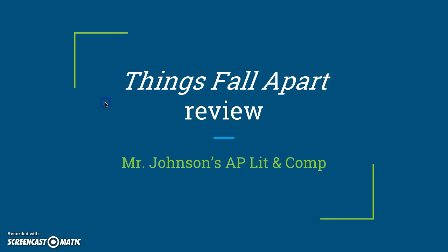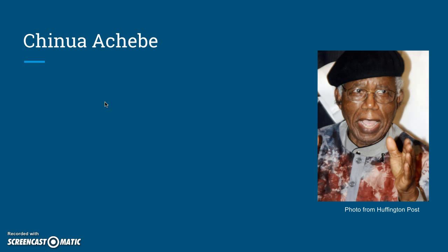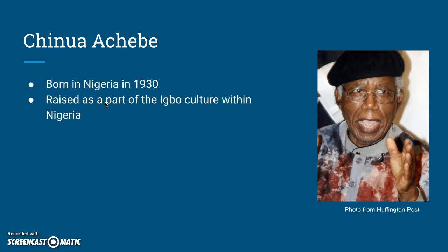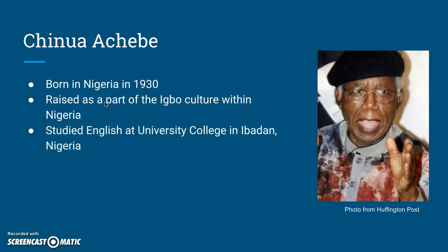Let's get started with a discussion about Chinua Achebe. Chinua Achebe, the author of Things Fall Apart, was born in Nigeria in 1930. He was raised as part of the Igbo culture within Nigeria and ended up studying English at University College in Nigeria after switching his major a few different times. He grew to love English and writing, and he actually died in 2013 at the age of 82, at which time he was teaching literature classes in Boston.